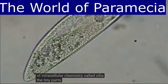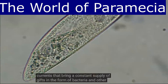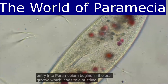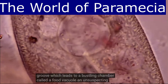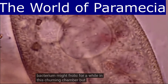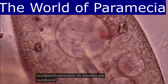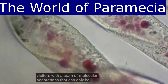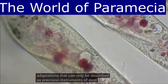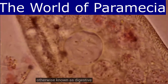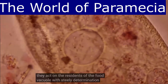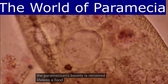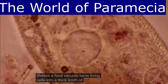The cilia create water currents that bring a constant supply of food — in the form of bacteria and other organic matter — into the paramecium. Entry begins in the oral groove, which leads to a chamber called the food vacuole. An unsuspecting bacterium might enter this churning chamber, but its days are numbered. The paramecia greets its visitors with molecular adaptations — digestive proteins that act with determination, chomping and cutting, rendering food cells into a thick broth of nutrients.